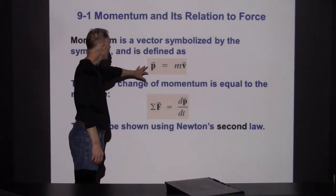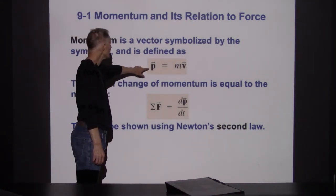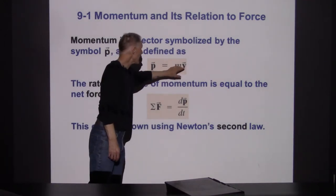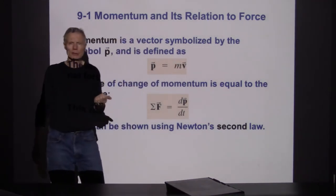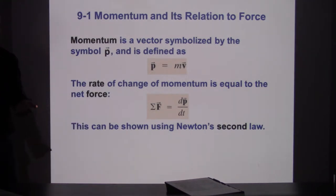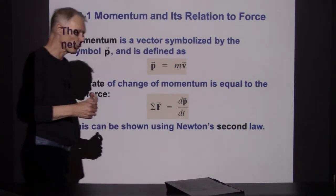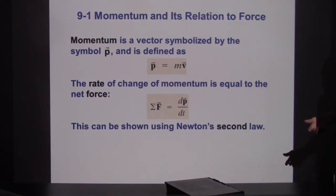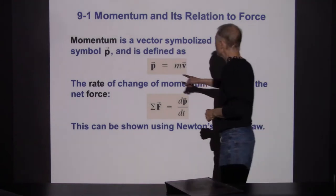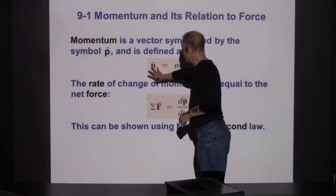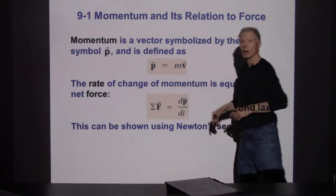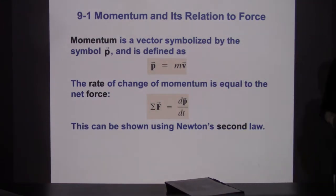Here is how linear momentum is defined: linear momentum is defined as the mass times the velocity. Notice this is vectorially written — these are vectors. So there's going to be a momentum in the x direction, a momentum in the y, a momentum in the z, depending on what the components of velocity are. Three components of momentum line right up with the three components of velocity for the object.